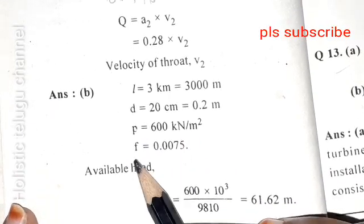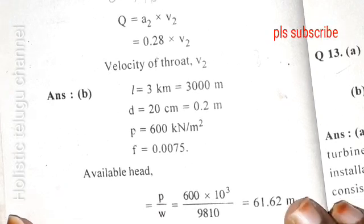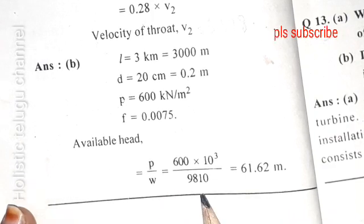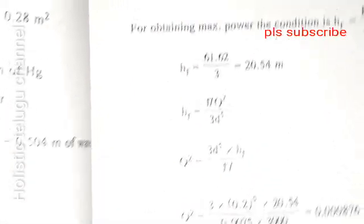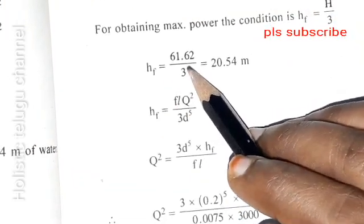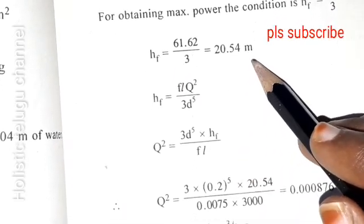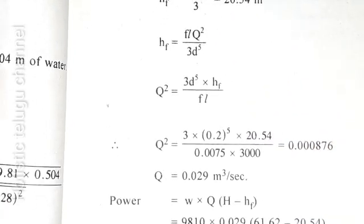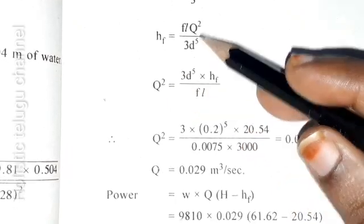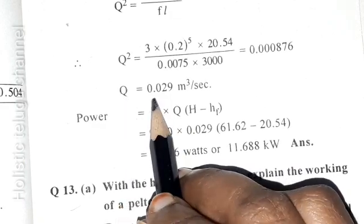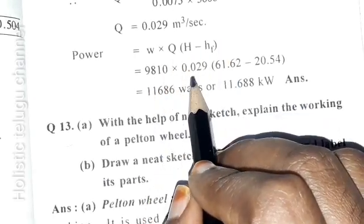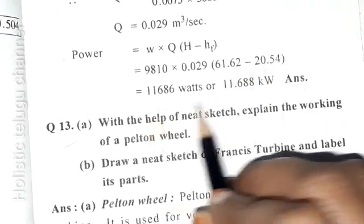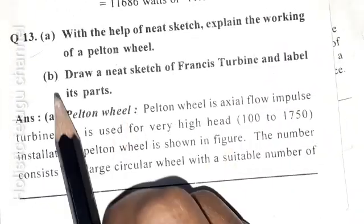Next: length 3 kilometers equals 3000 meters, diameter 20 cm equals 0.2 meters, P equals 600, F equals 0.0075. Available head is P by w, so 600 times 10³ divided by w, where water is 9810, equals 61.62 meters. For maximum power, the condition is hf equals H by 3, so hf equals 61.62 divided by 3 equals 20.54 meters. hf formula is F L Q² divided by 3 D to the power 5. Solve for Q squared. Power equals W into Q into h minus hf. So 9810 into Q into 0.029 into h 61.60 minus hf 20.54. Calculate to get 11.688 kW.